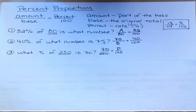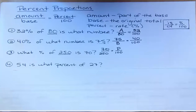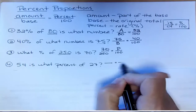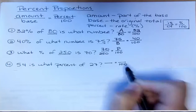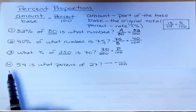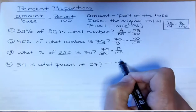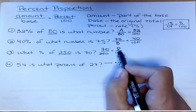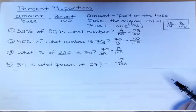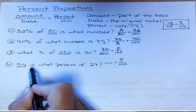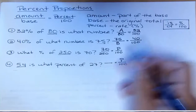And the last one: 54 is what percent of 27. It's worded a little differently—I wanted you to see they could be worded differently. We can still figure out what goes where. We know 100 in the bottom right. We look for the number with a percent symbol—there is none, it says 'what percent,' so I don't know what the percent is again. That was another one like the last one. Where does the 54 go? Is it the amount or the base? 54 'is'—that's the amount, so 54 goes up here.